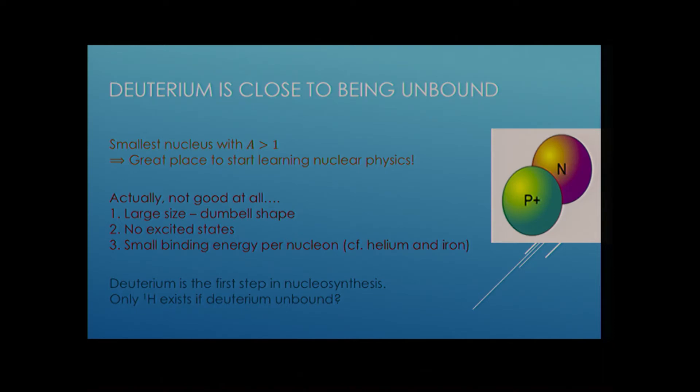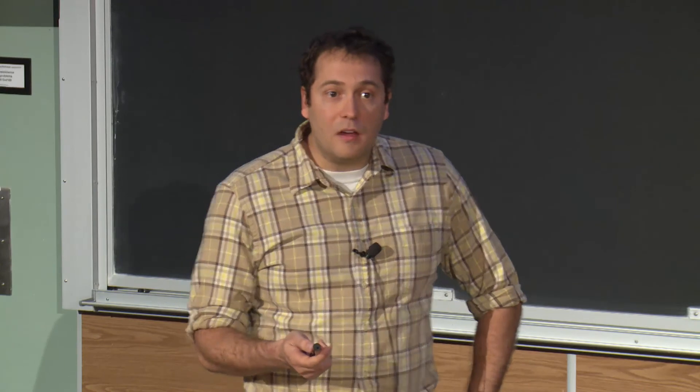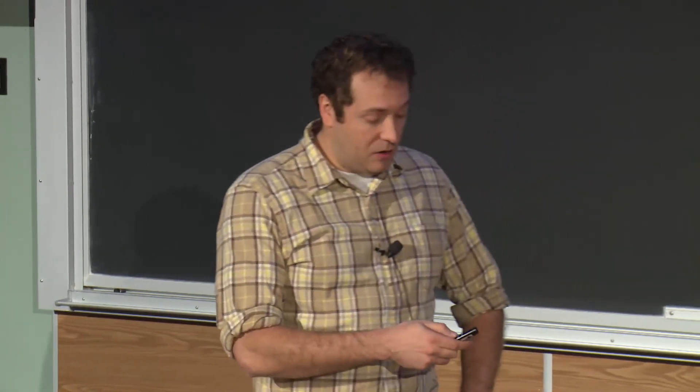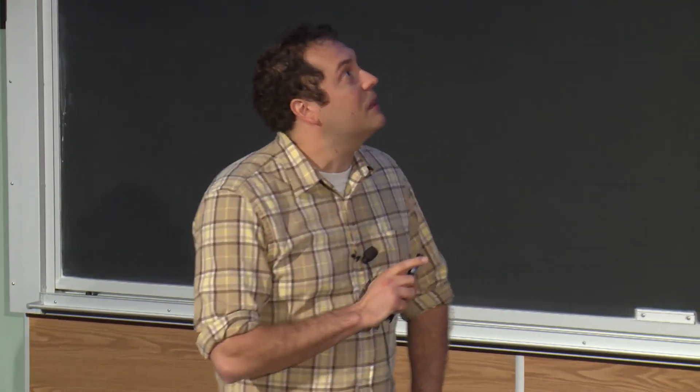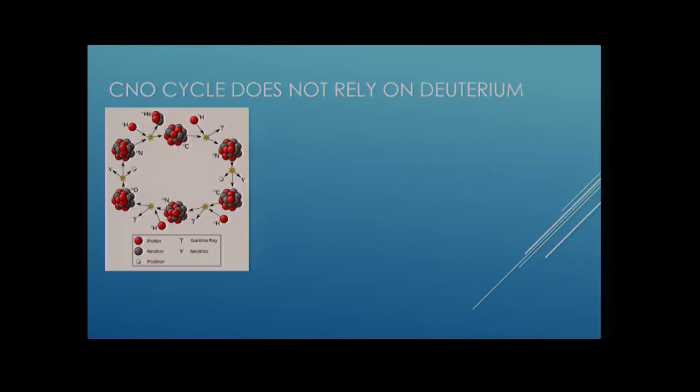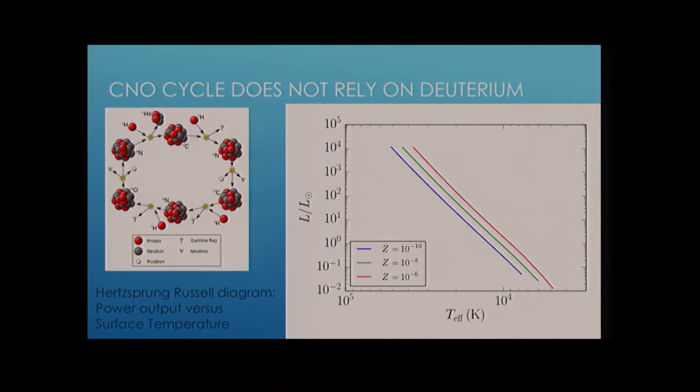Unfortunately, deuterium is not at all a typical nucleus. It's got a dumbbell kind of shape instead of being like a little ball. It looks more like a dumbbell. There are no excited states and it's very weakly bound. So in order to do any experiments on deuterium in a lab, you end up just blowing it apart. So unfortunately, it's not a good nucleus to learn nuclear physics about. However, deuterium is the first step in nucleosynthesis, so we need to think about this. And so if it's so loosely bound, what would happen in a universe that doesn't have a bound state of deuterium? Is this, again, only going to have single-proton hydrogen and basically be free of any heavier elements?